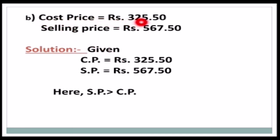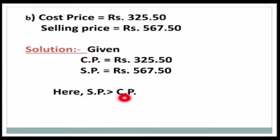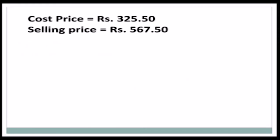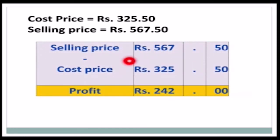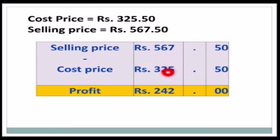Question 1(b): Cost Price = rupees 325 and 50 paise; Selling Price = rupees 567 and 50 paise. SP is greater than CP, so there is a profit. Profit = SP − CP = 567.50 − 325.50. Subtracting: 0 − 0 = 0, 5 − 5 = 0, 7 − 5 = 2, 6 − 2 = 4, 5 − 3 = 2. There is a profit of rupees 242.